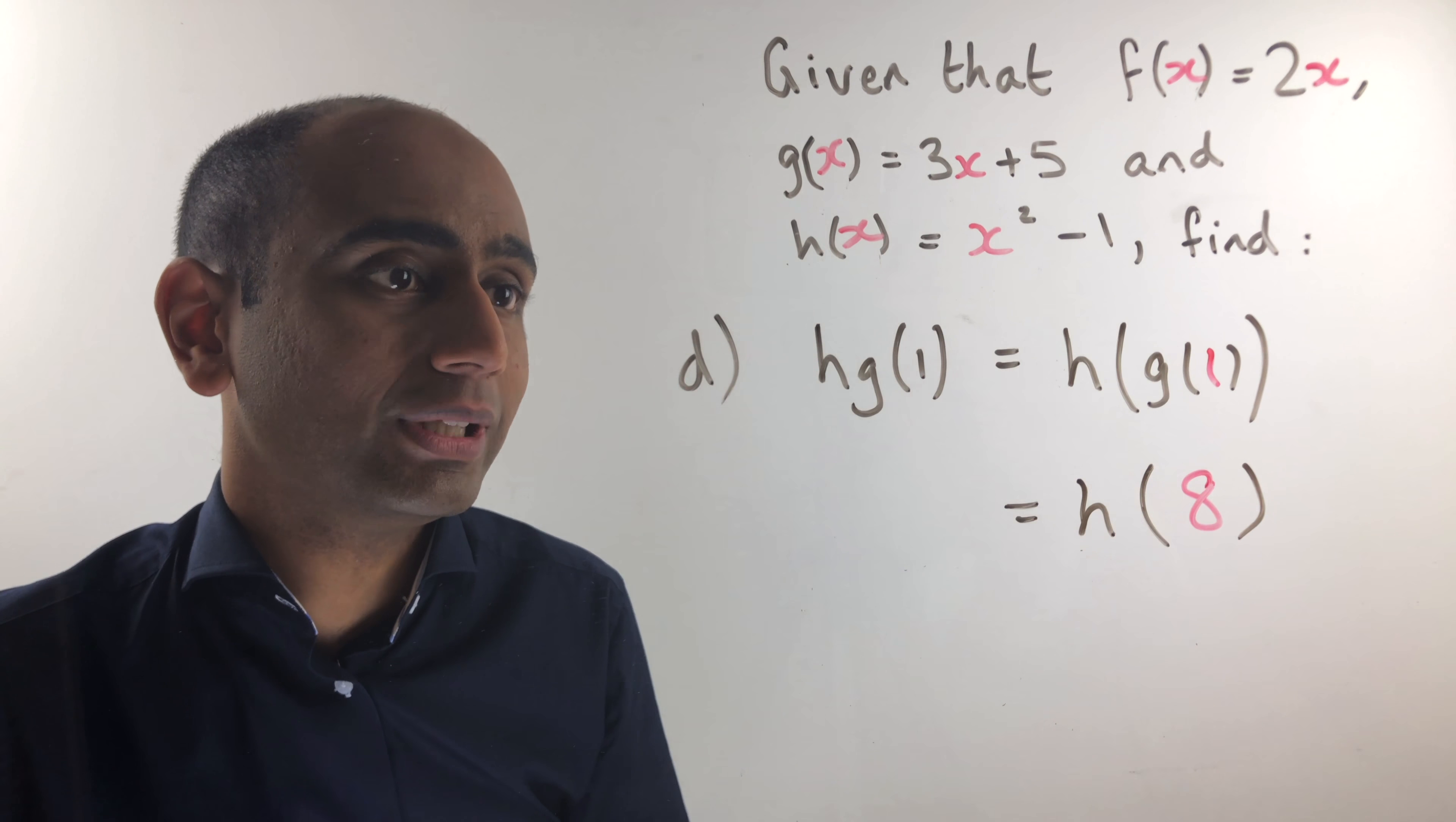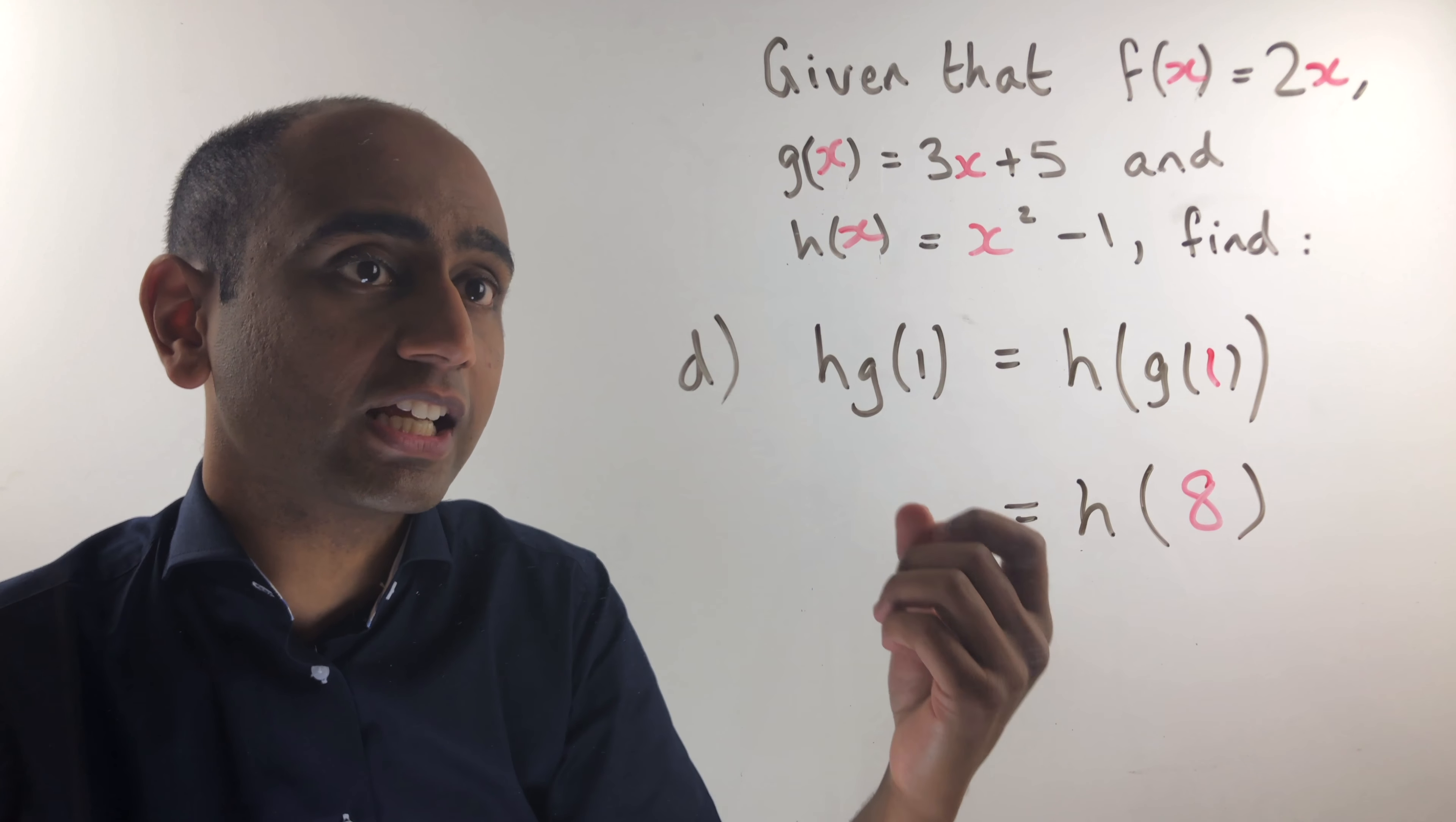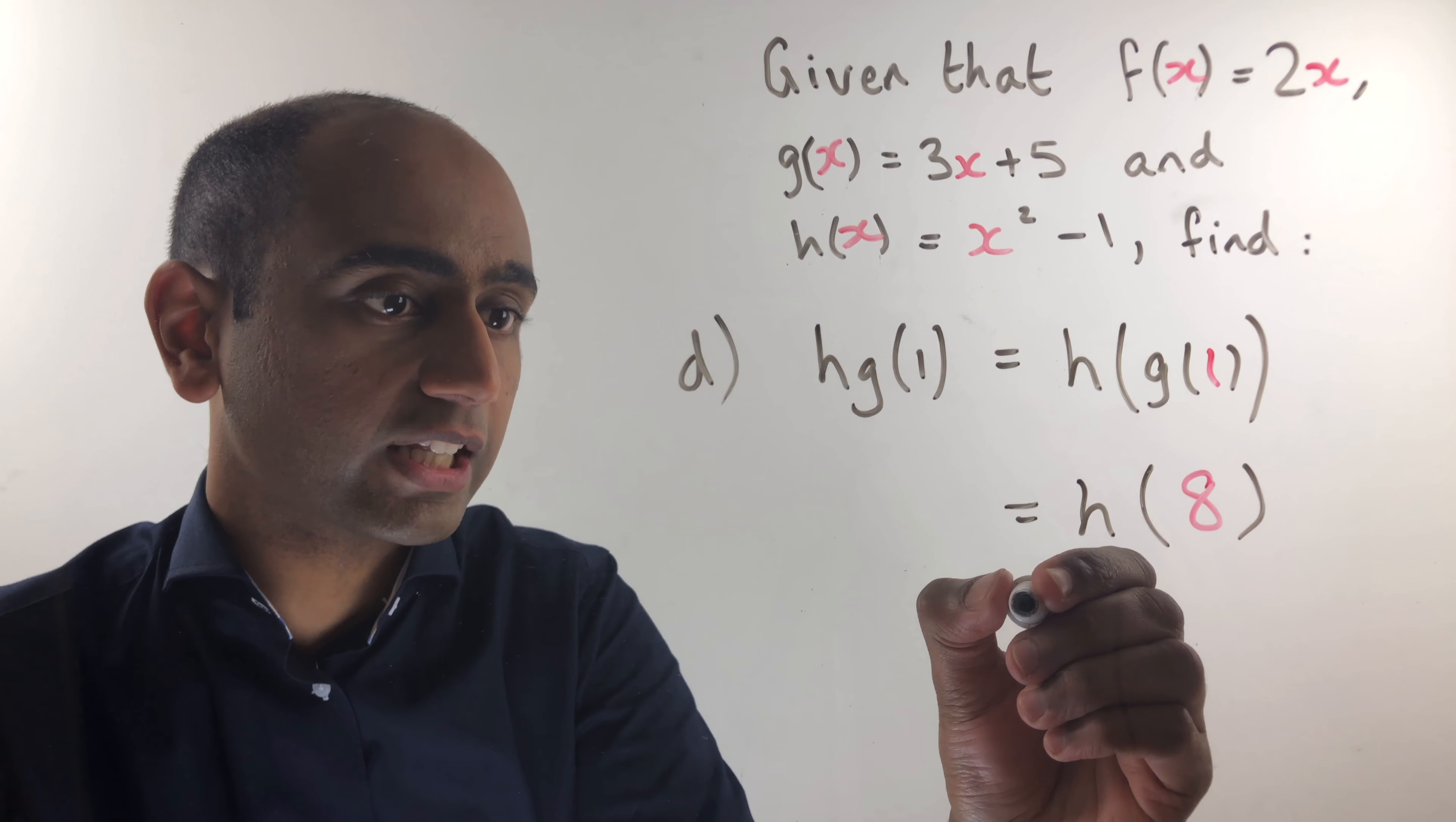So 8 is our new input. g of 1 was equal to 8 and that's what we're going to put into function h. h of 8 then is going to be 8 squared minus 1. So we can write that out.